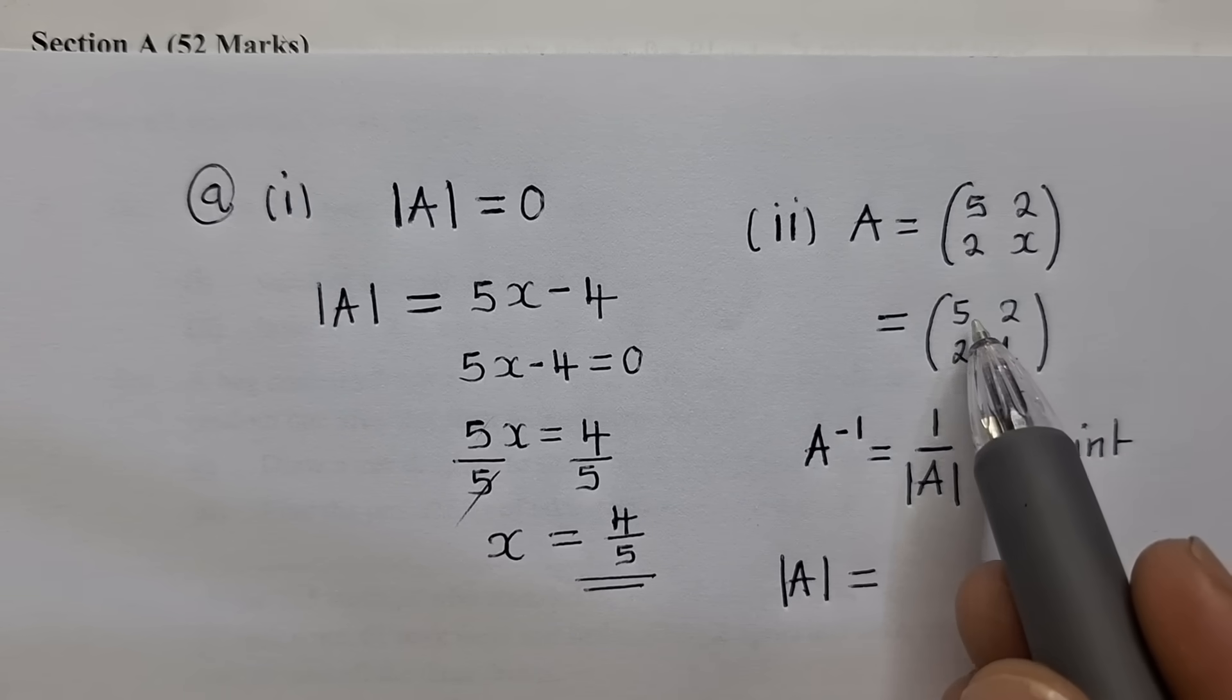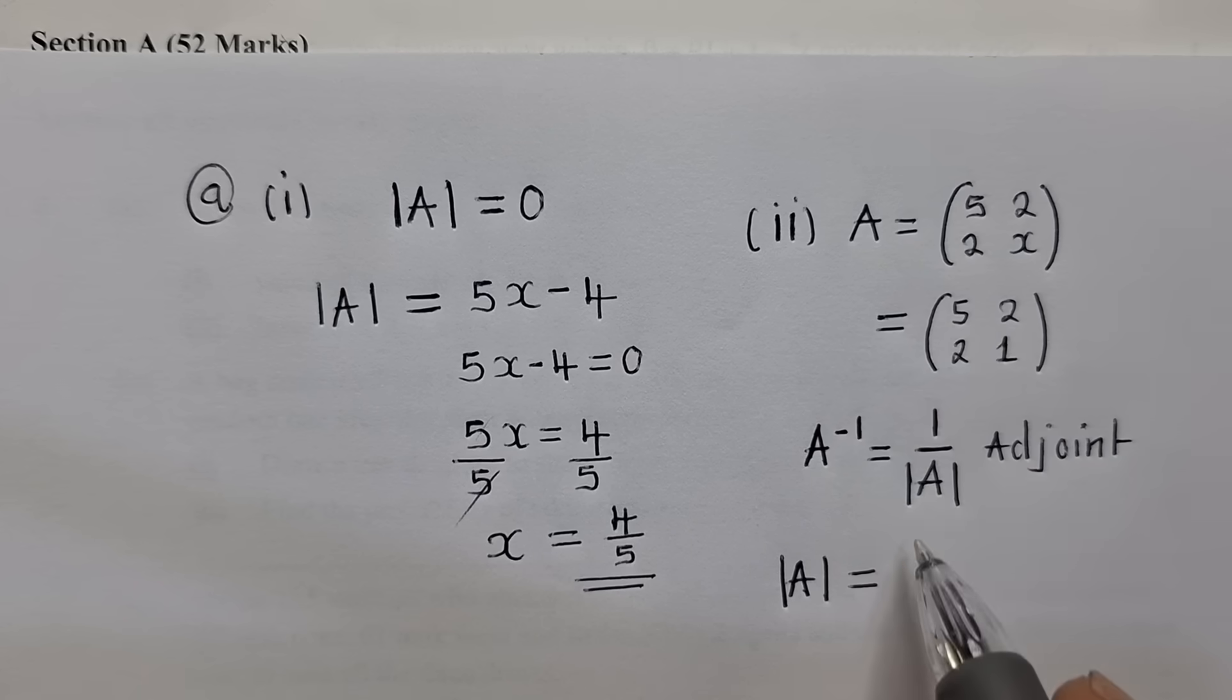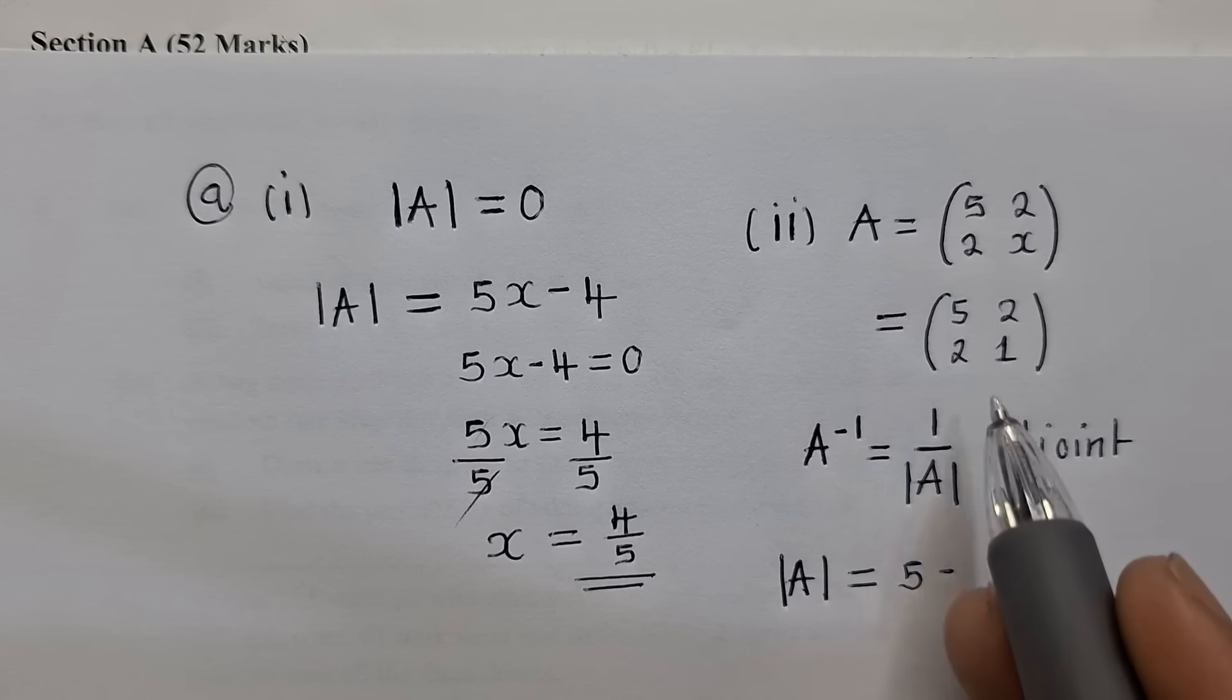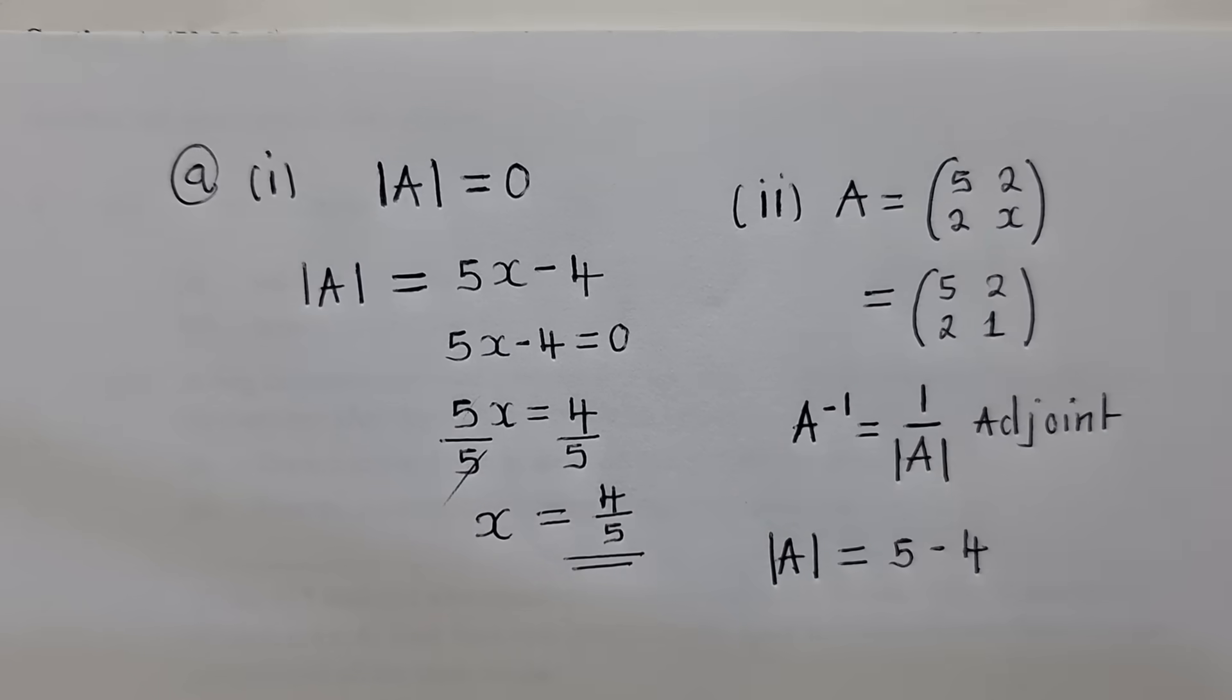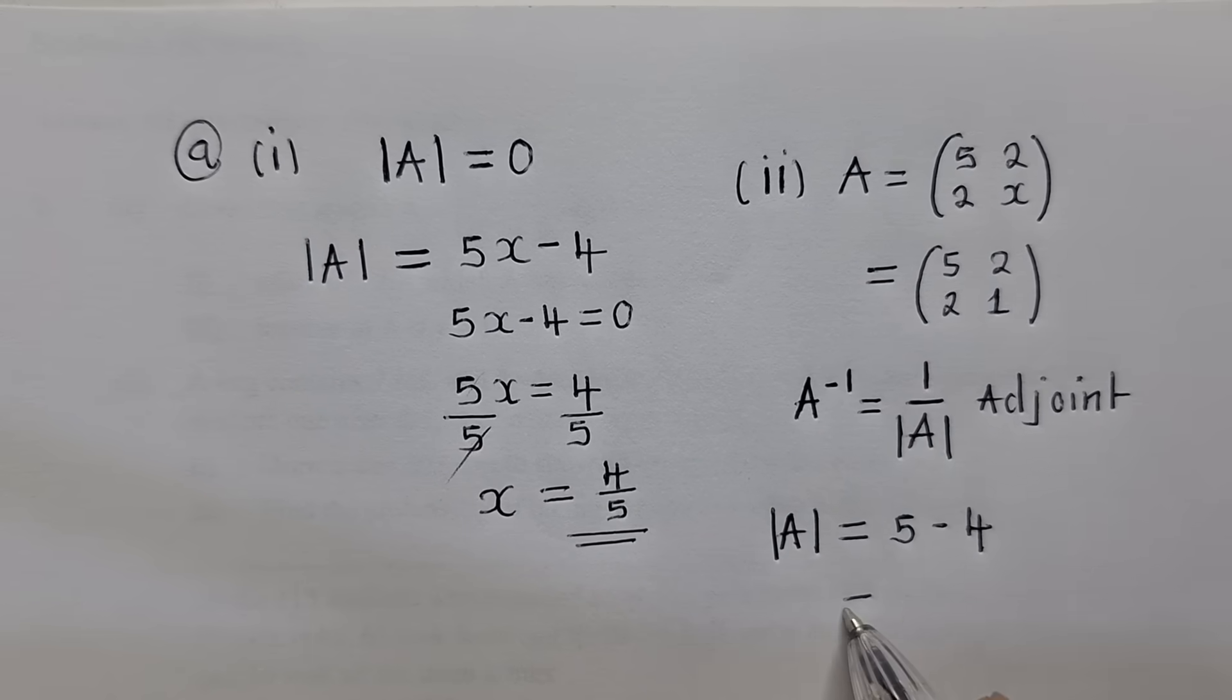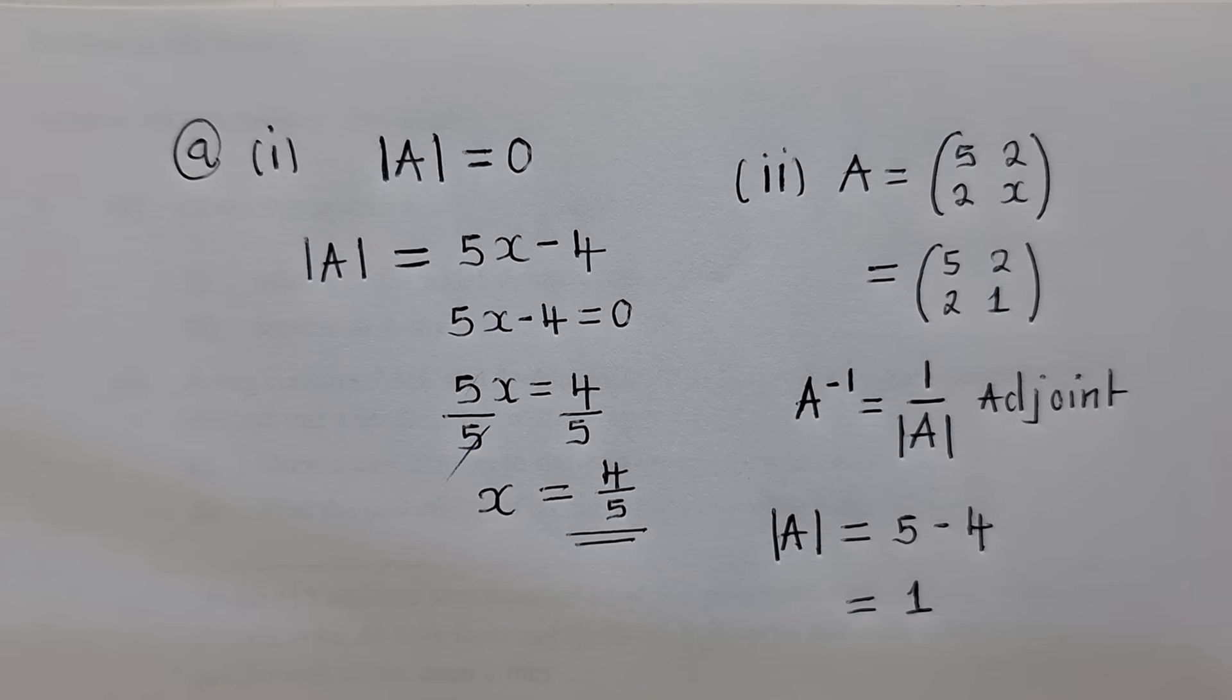So first thing here, we need to find the determinant. Determinant of A is equal to, we multiply the major diagonal, that is 5 times 1, it will give us 5, minus 2 times 2, will give us 4. And when we simplify here, we're getting the determinant to be equal to 1.